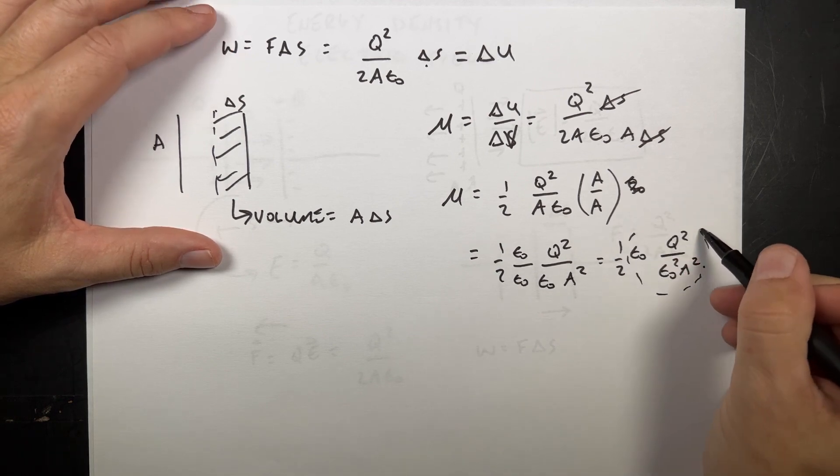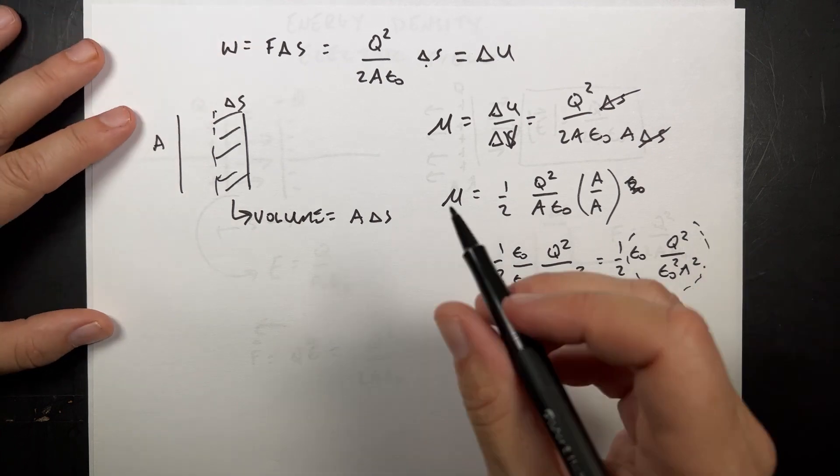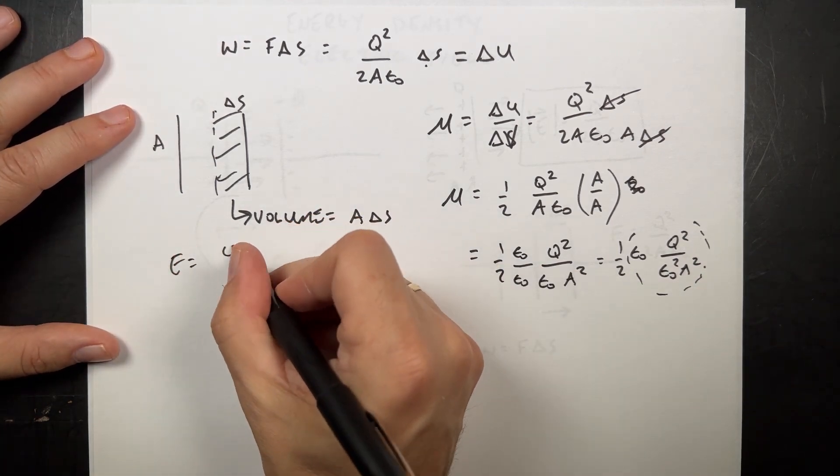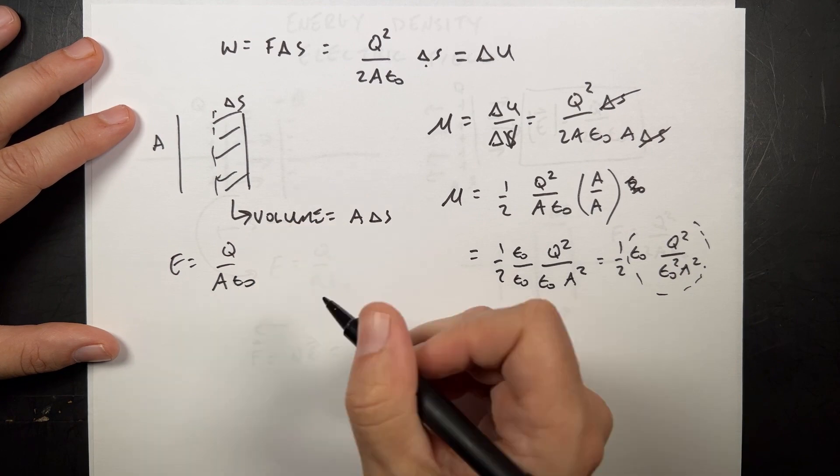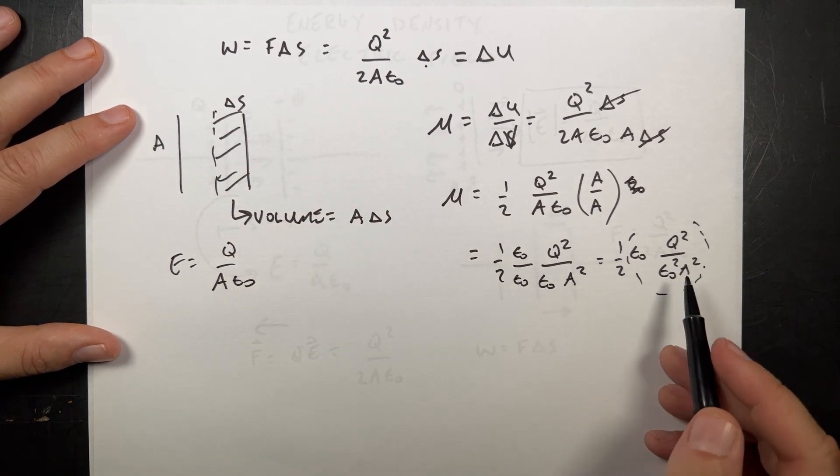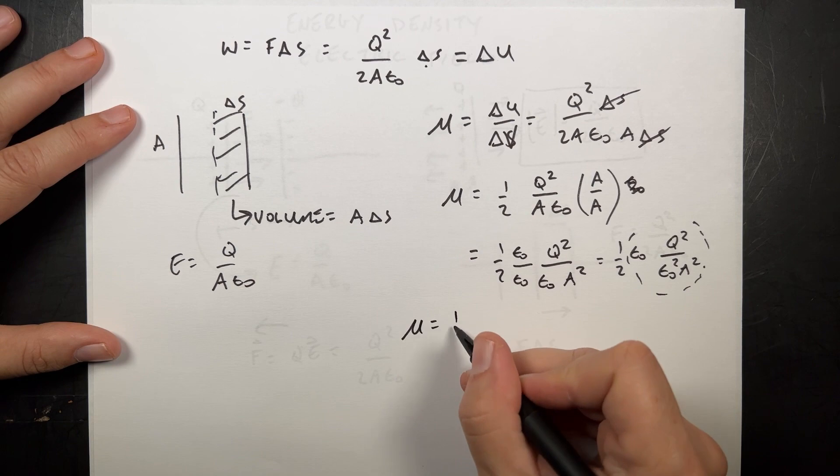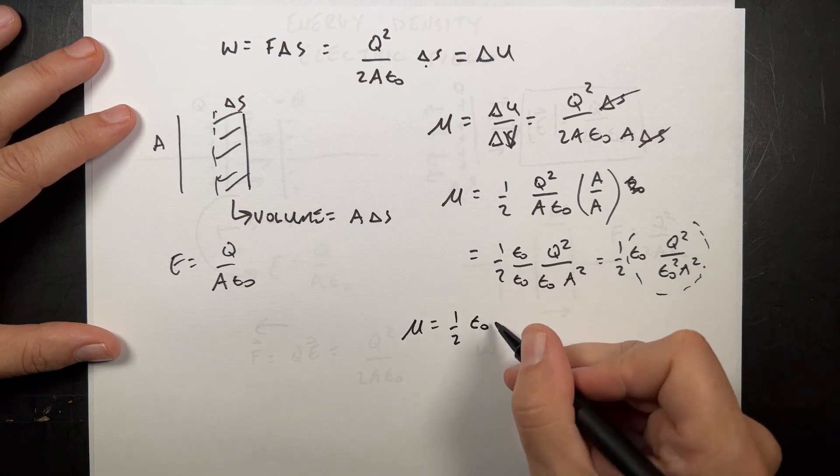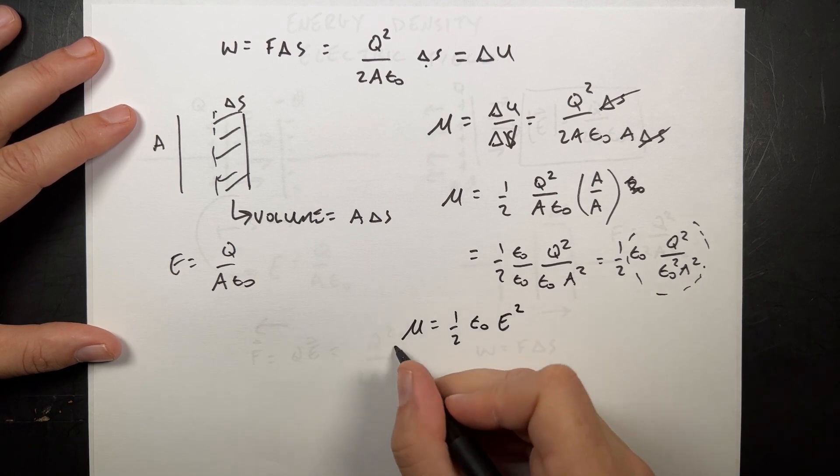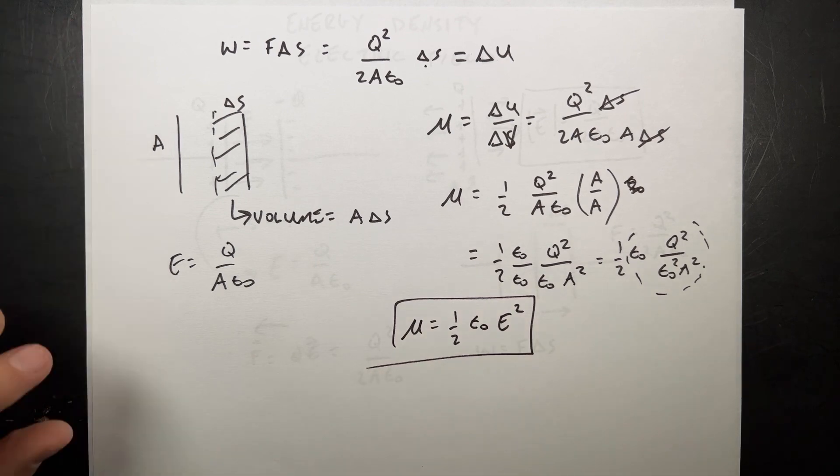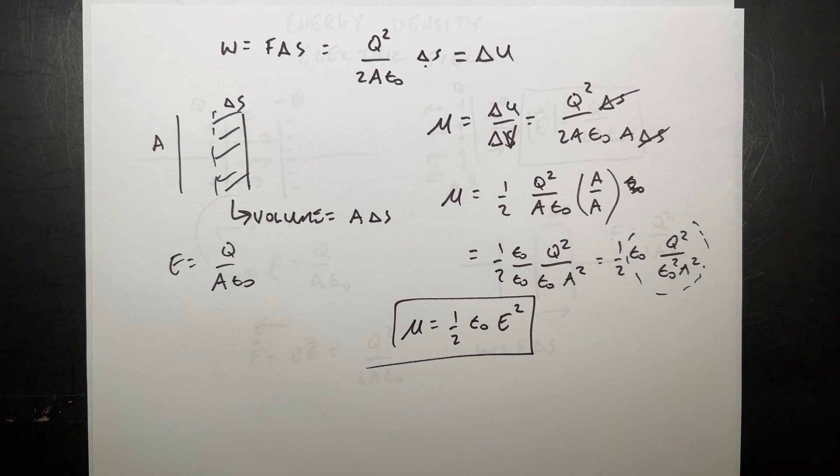This is the electric field inside the parallel plate. Remember E is Q over A epsilon naught. It's just the same thing squared. So now I can write this mu as one half epsilon naught E squared. And that is the energy density of the electric field. There's also an energy density for the magnetic field. But I'll do that later.